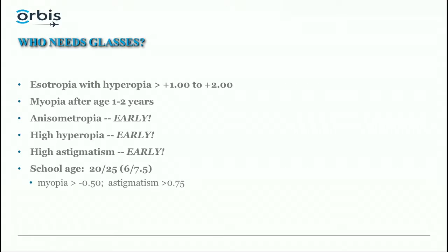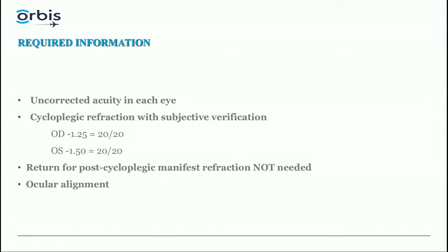Required information: first, determine the uncorrected acuity in each eye. Second, perform a cycloplegic refraction with subjective verification. I deliberately avoid the term 'manifest refraction,' since manifest means without eye drops. What I use is a cycloplegic refraction with subjective verification — meaning I record the refraction and the vision the patient achieves with that refraction while dilated.